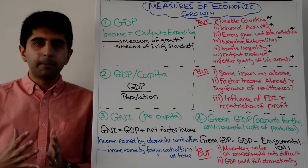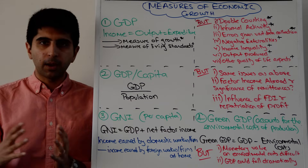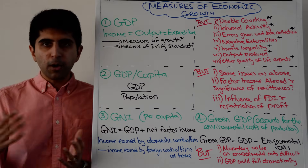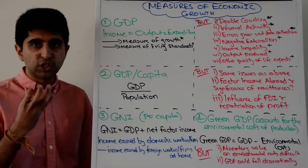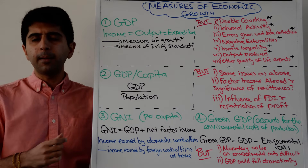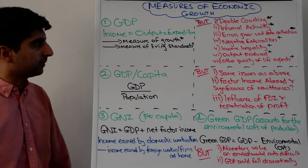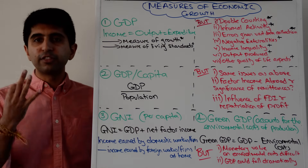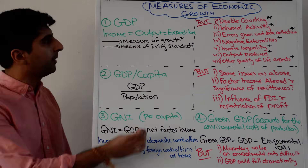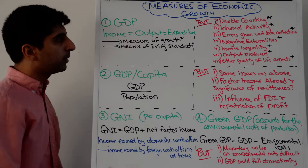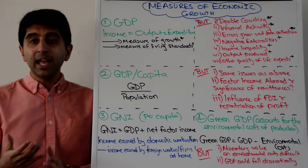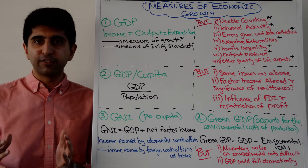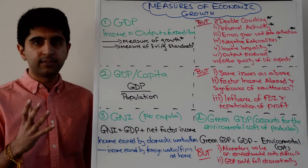So what different measures of national income can we have? What are the different measures of economic growth? The one used most in the world is GDP, or real GDP — that is GDP adjusted for inflation. We learned in the last video that there are three ways of working out GDP: the income method, the output method, and the expenditure method. It doesn't matter which one is used, because they are all measures of the same circular flow of income, so they will all give us the same figure.